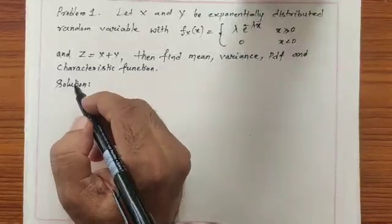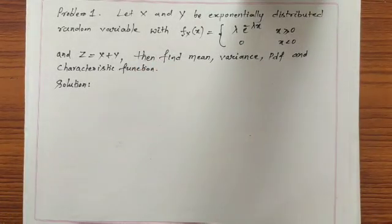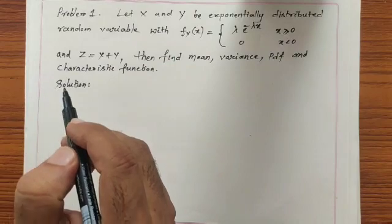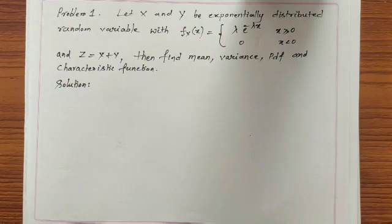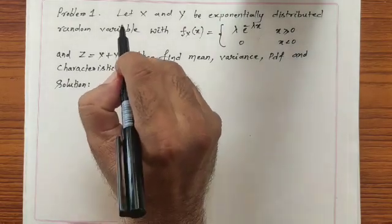Dear students, last class we discussed the sum of two independent random variables and we found the mean as well as the variance of z equals x plus y. Today we will discuss a problem based on that.